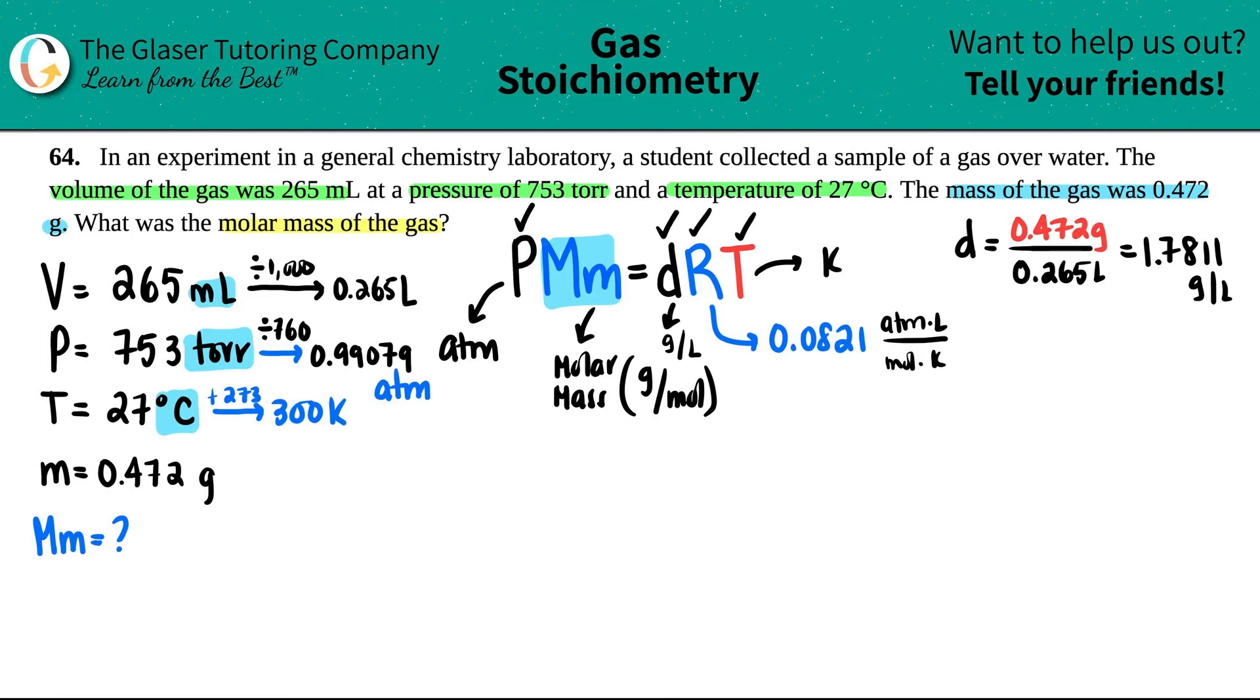Now I have the density. Solving for the molar mass, let's plug everything in. Pressure 0.99079 times x, because that's what we're solving for, times the density 1.7811 times the R value 0.0821 times the temperature 300. Then get x by itself, so I have to divide on each side by the 0.99079.